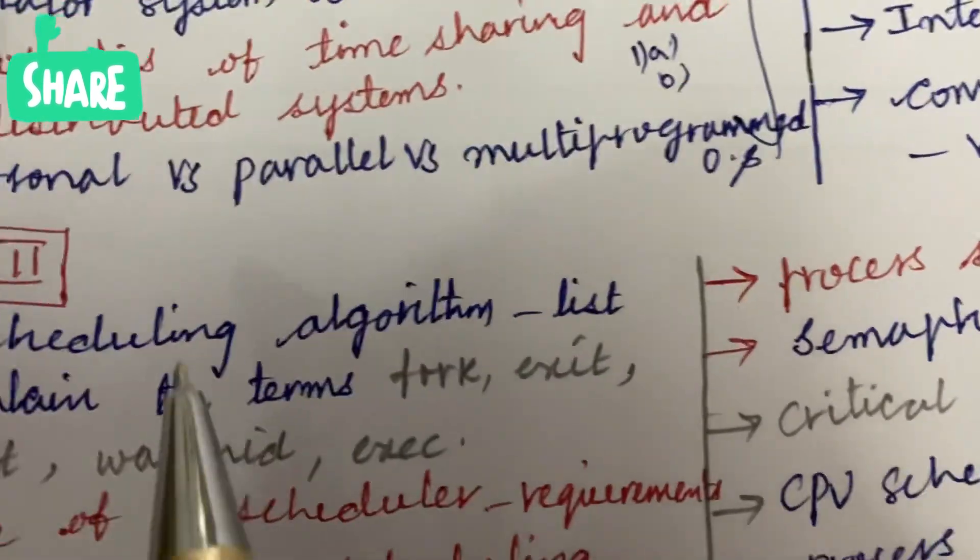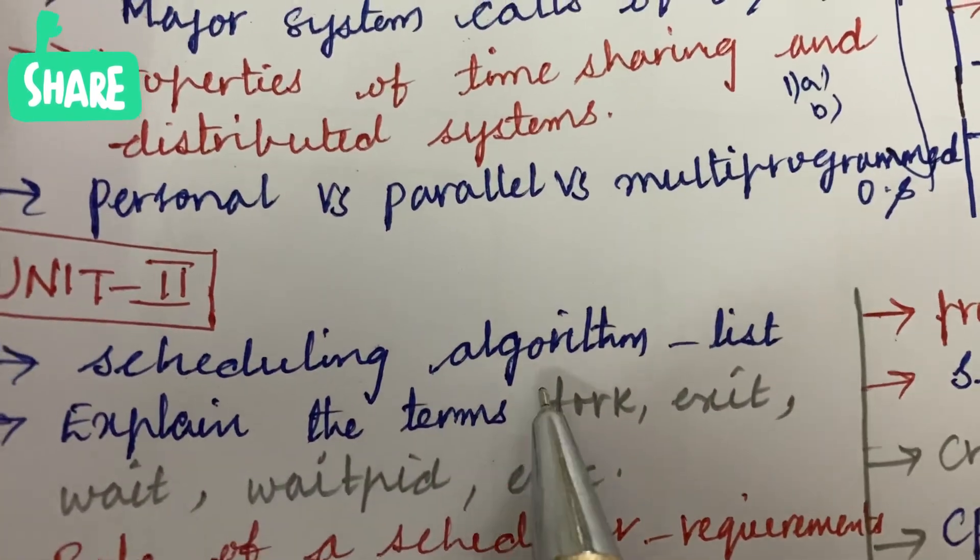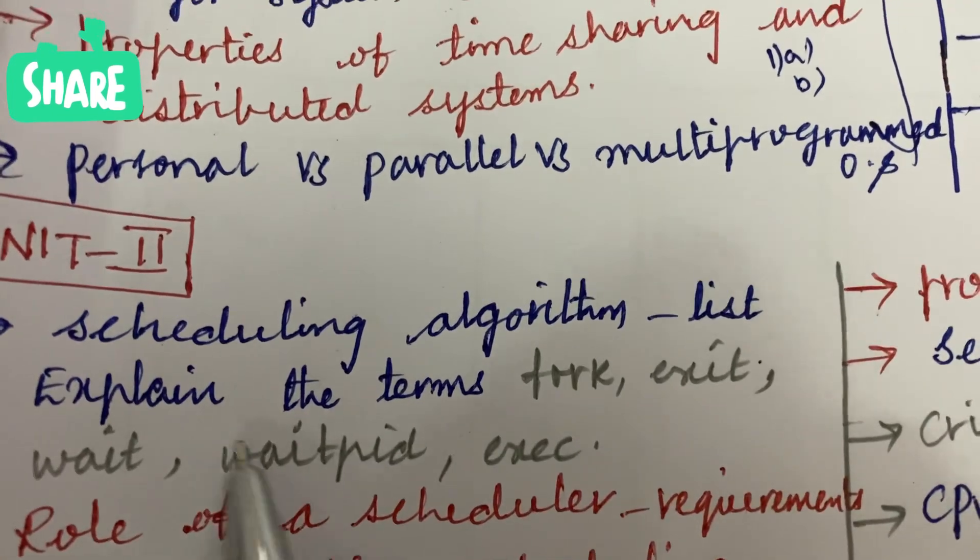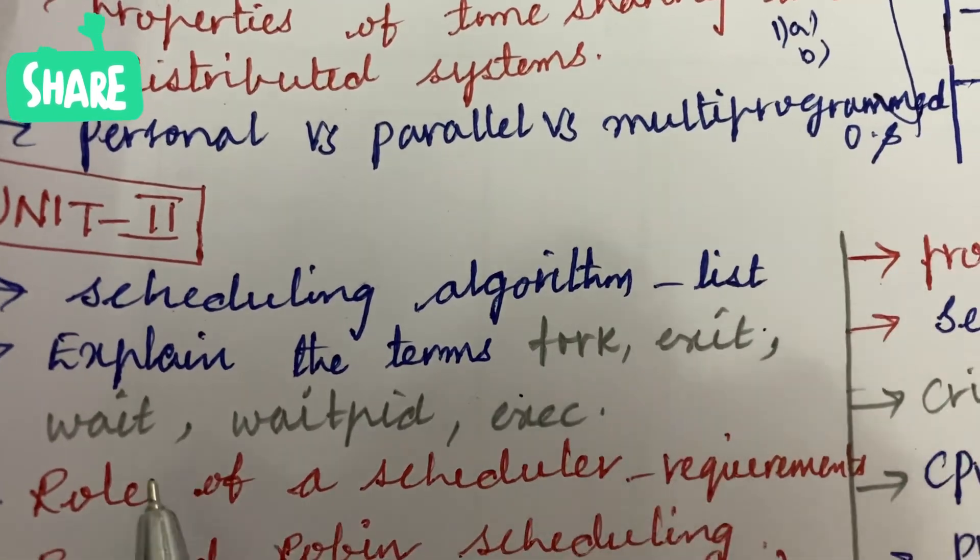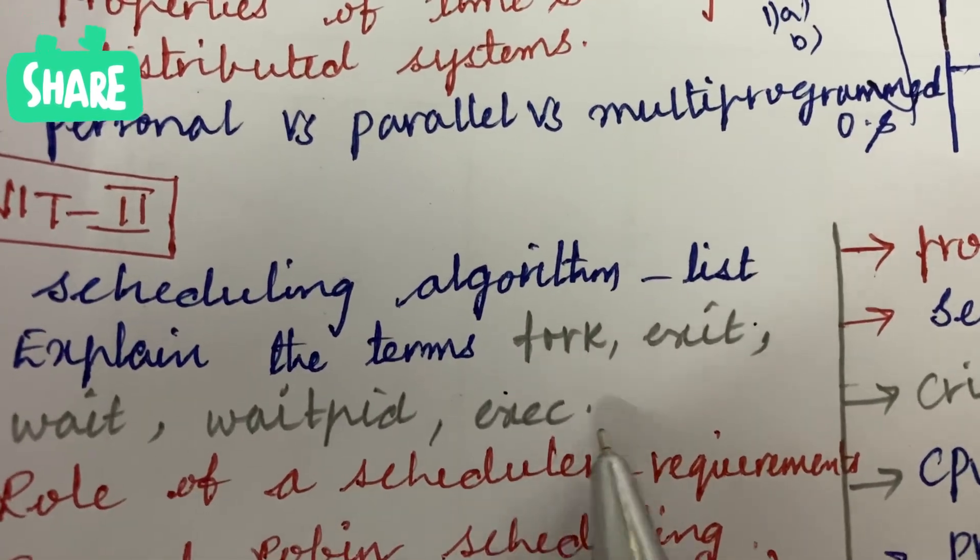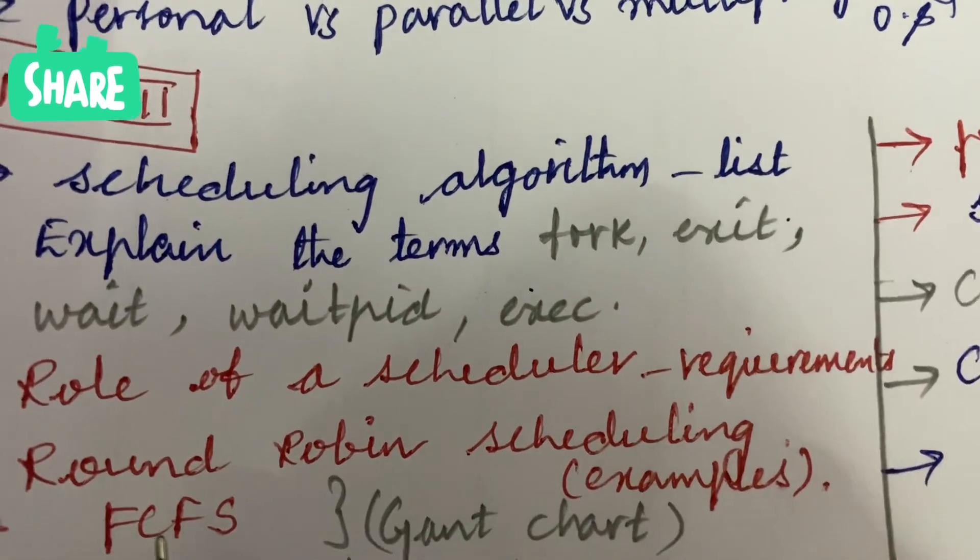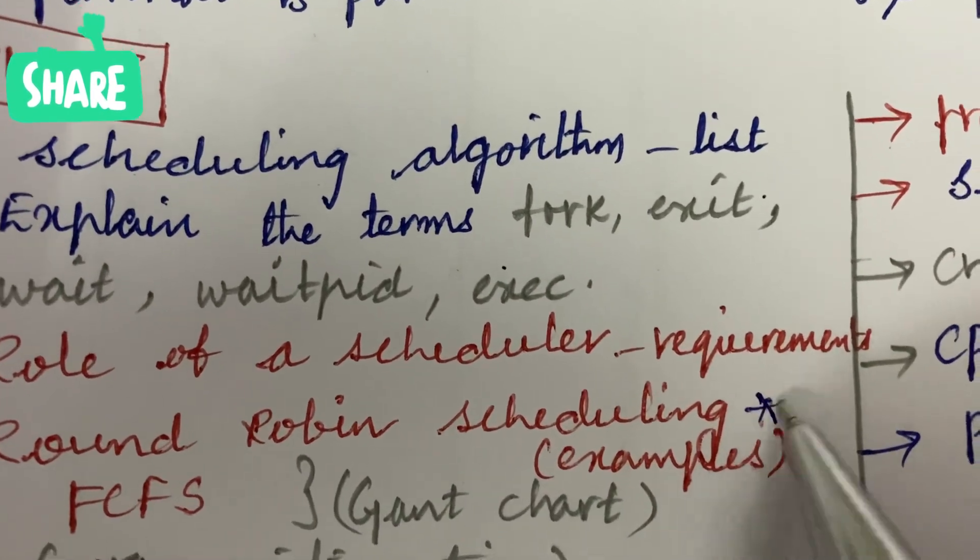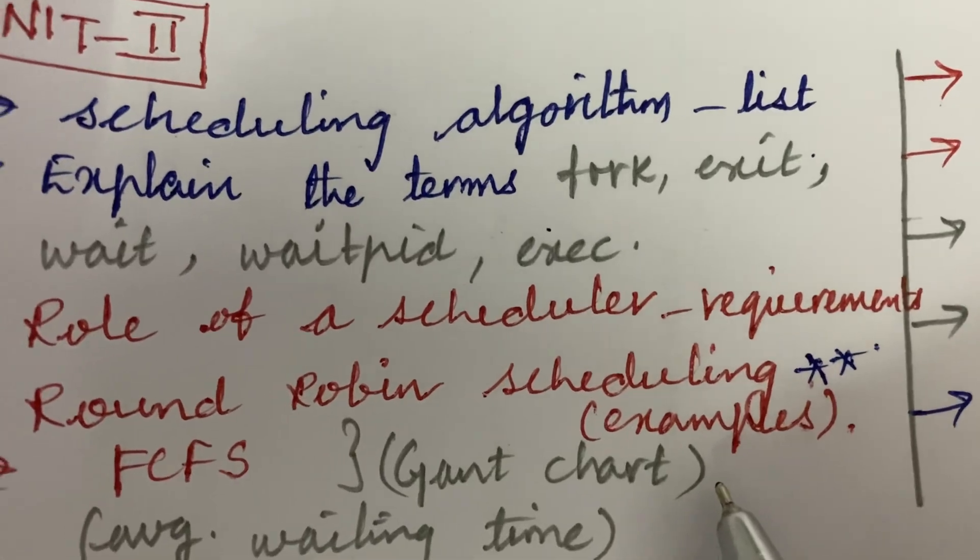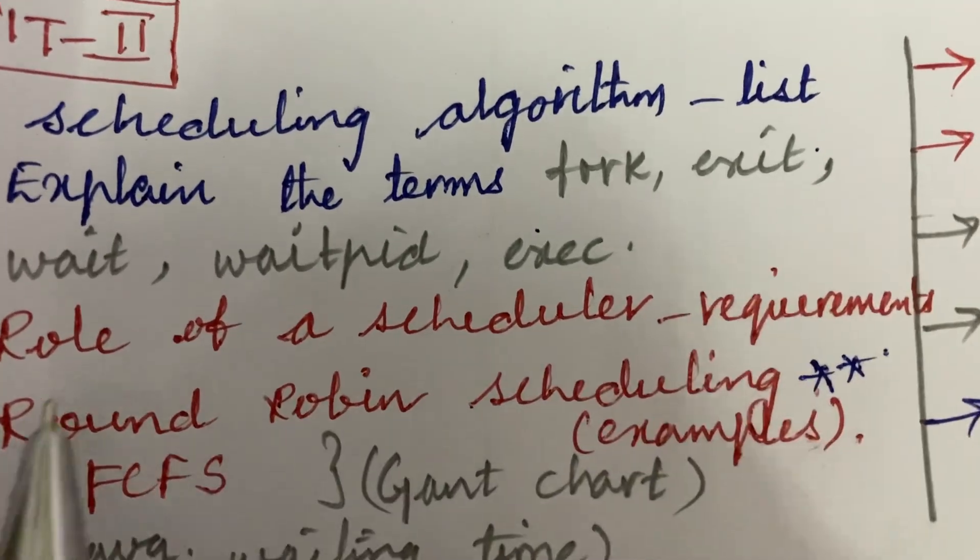Unit 2 is all about the scheduling algorithms. List and explain the terms fork, exec, wait, PID and exec, as well as the role of a scheduler and its requirements, and round robin scheduling and its algorithm along with examples.